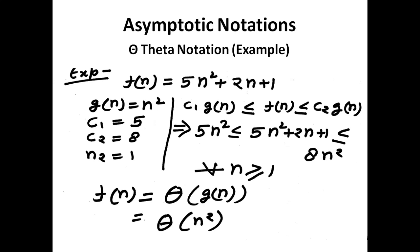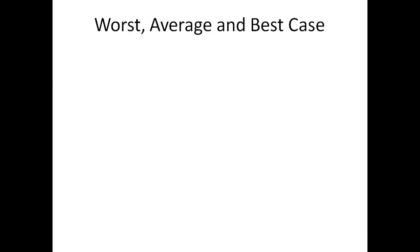These are the three asymptotic notations by which we can define the upper bound, lower bound, and exact (upper and lower) bound of our algorithm.